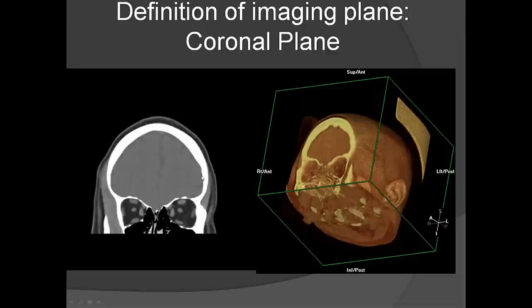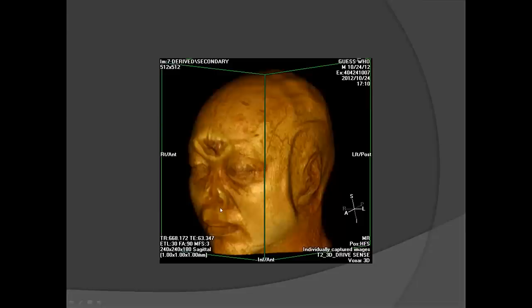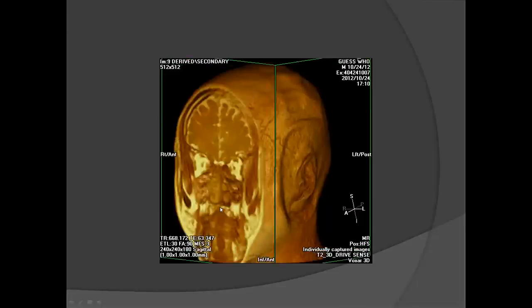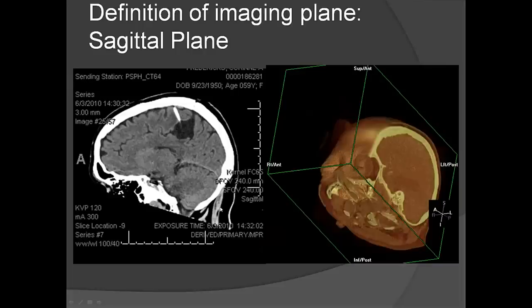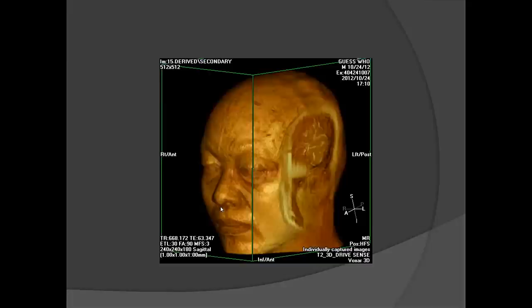In the coronal view, the patient is facing us — again, patient's left side is our right side, cutting through like this. In the sagittal view, we usually scroll from left to right, and I'll tell you where I am as we go.